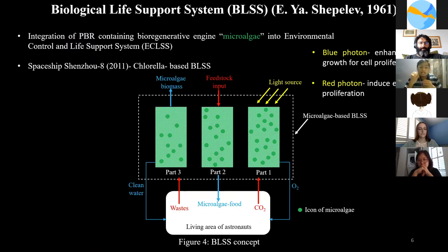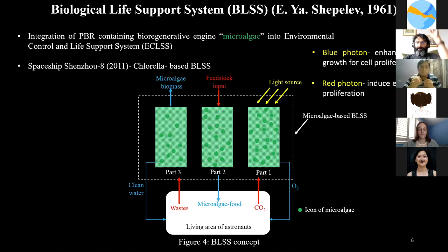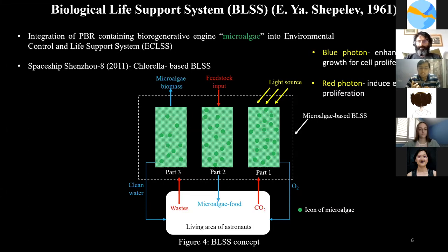By understanding the positive effects shown in microgravity and space conditions, researchers asked: why not use this microalgae to support human survival? They incorporated a photobioreactor — used for the cultivation of algae — with an associated environmental control life support system where astronauts live. In this biological life support system, algae absorb carbon dioxide from astronauts and produce oxygen for the astronauts to breathe.